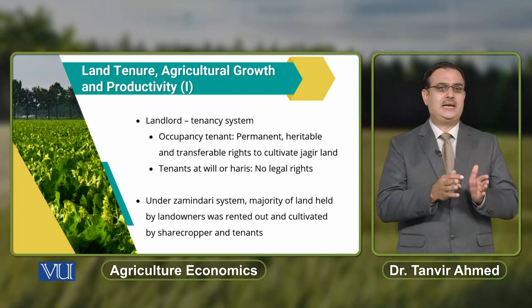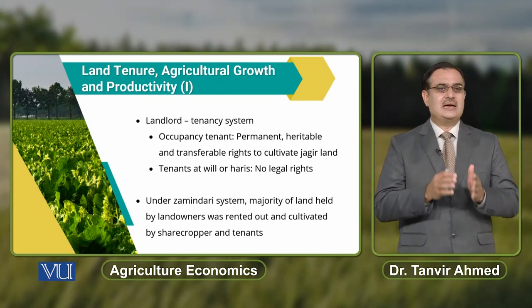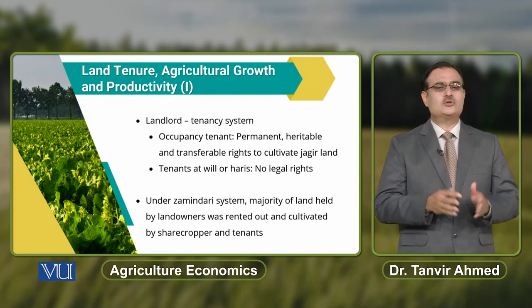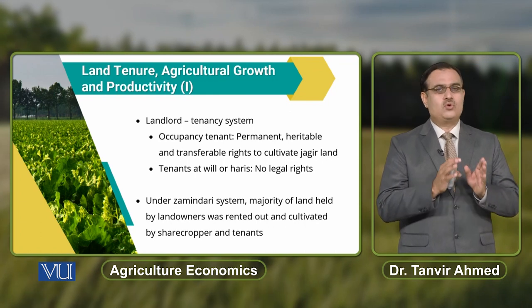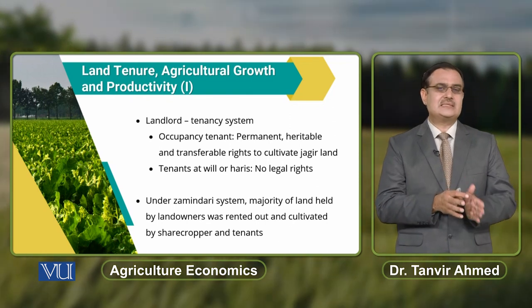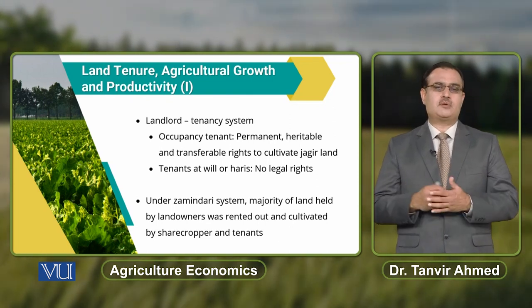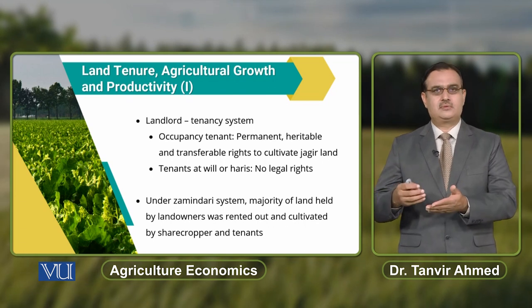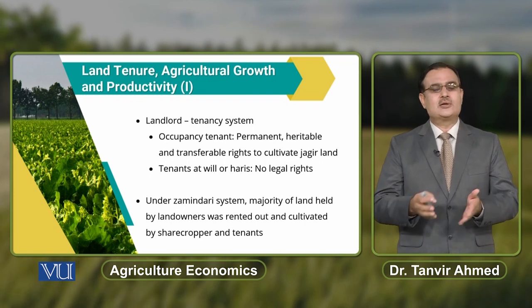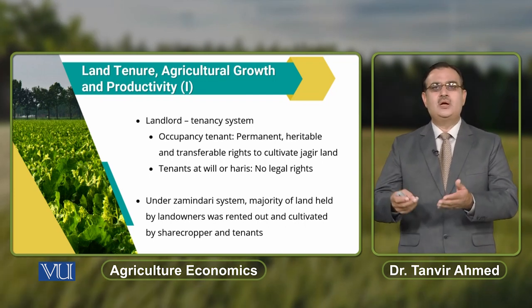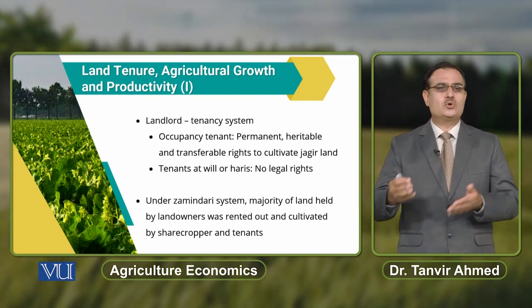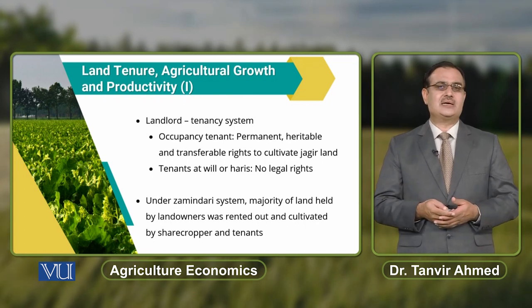Under the landlord tenancy system, the majority of land was owned by landowners who rented it out and had it cultivated by sharecroppers. The sharecropper would cultivate the land in exchange for a share of the produce. These are the two types of tenancy that existed during the zamindar system.